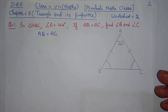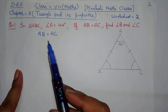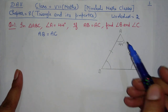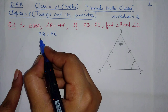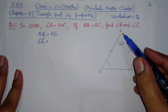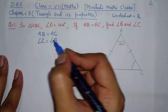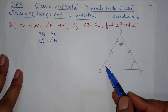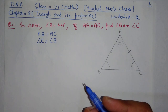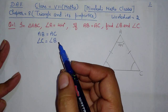We know that if two sides of a triangle are equal, then the angles opposite to them will also be equal. Now see — the AB side is here; if you go opposite to it, which angle will come? Angle C. And the AC side — if you go opposite to it, you reach angle B. So angle B and angle C become equal. The reason is: angles opposite to equal sides of a triangle are equal.